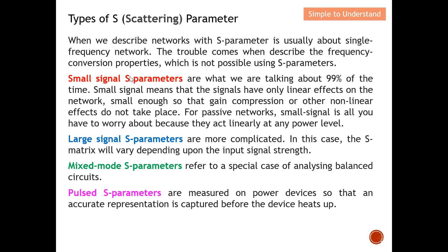There are mainly four types of S-parameters: small signal, large signal, mixed mode, and pulse S-parameters. Small signal S-parameters are what we deal with 99% of the time. 'Small signal' means the signal has only a minor effect on the network — small enough that gain compression or other non-linear effects do not take place. The signal remains within the linear region. For passive networks, small signal is all you need to consider.